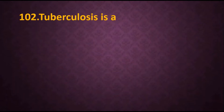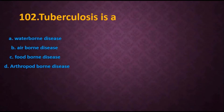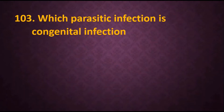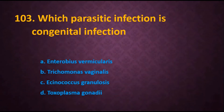Question 102: Tuberculosis is a — options are: A) waterborne disease, B) airborne, C) foodborne, D) arthropod-borne. Obviously the answer is airborne disease. Question 103: Which parasitic infection is a congenital infection? Options are: A) Enterobius vermicularis, B) Trichomonas vaginalis, C) Echinococcus granulosus, D) Toxoplasma gondii.